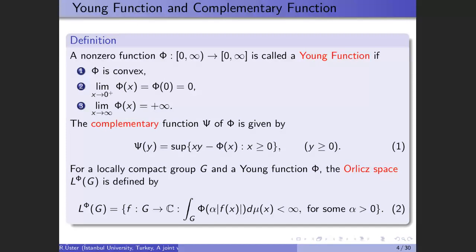For defining the Orlicz space, our main tool is the Young function. A non-zero function phi from zero to infinity into the extended real numbers is called a Young function if phi satisfies three conditions. For any given Young function phi, its complementary pair psi is defined by the following equality. By definition, psi is also a Young function, and by definition of the Young function it can be discontinuous at certain points.